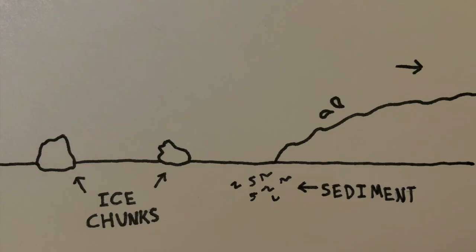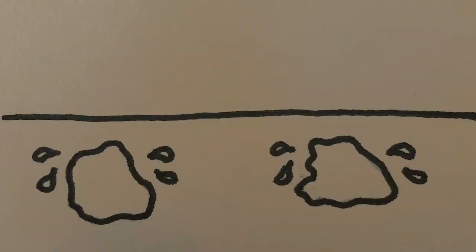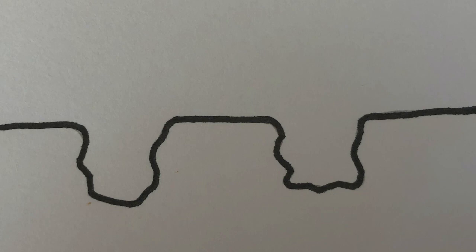As that glacier is retreating north it is also melting, and all of that melt water that spills off of the glacier is picking up tons of sediment. As it flows, it deposits that sediment — also called outwash — on top of our big chunks of glacial ice that have been left behind. So now our glacial ice has been buried by this outwash underground, and all that underground ice starts to melt, getting smaller and smaller as the ground caves in around it, forming huge depressions.